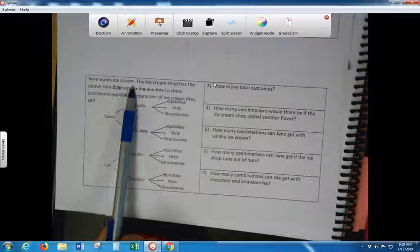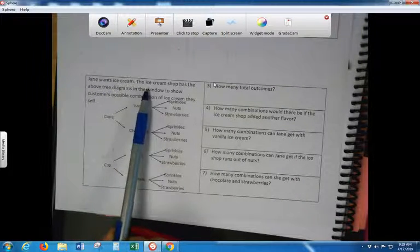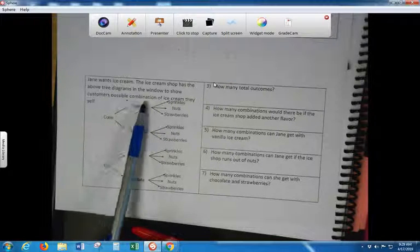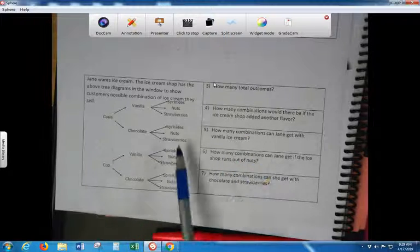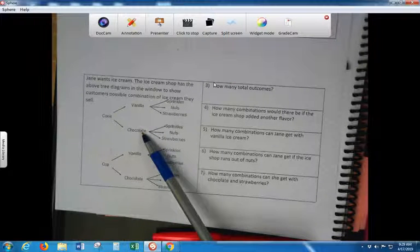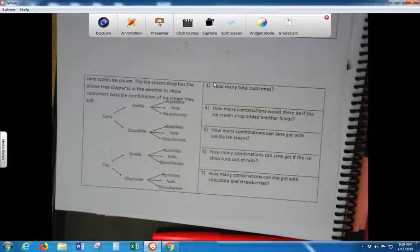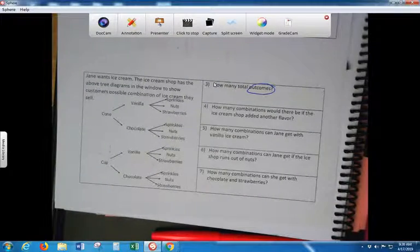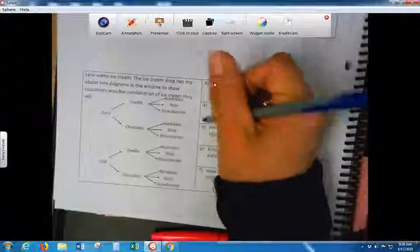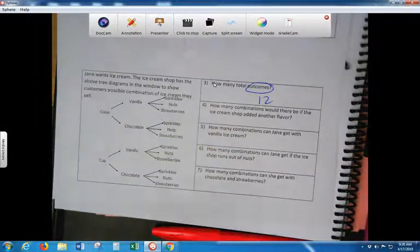Jane wants ice cream. So do I. The ice cream shop has the below tree diagram in the window to show customers possible combinations of the ice cream they can sell. So, I can either have a cone or a cup, right? The flavors are vanilla or chocolate, and the toppings are, okay? Do you guys see them? The denominator, which is your outcome, is what? What's your outcome? You add up all the lines at the end. If you add up all the ones that stick out, that's your outcome. That would be your denominator.